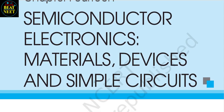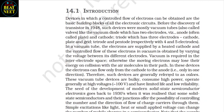Materials, Devices and Simple Circuits. We are starting from this chapter and further we will cover all the chapters. So let's start. Introduction: Devices in which controlled flow of electrons can be obtained are the basic building blocks of all electronic circuits.